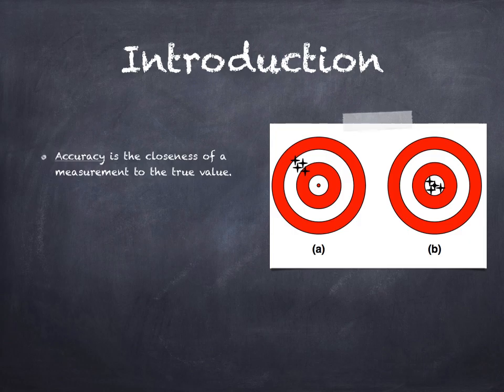In picture A, the darts are clustered close together but far from the bullseye. Therefore, these measurements are very inaccurate.